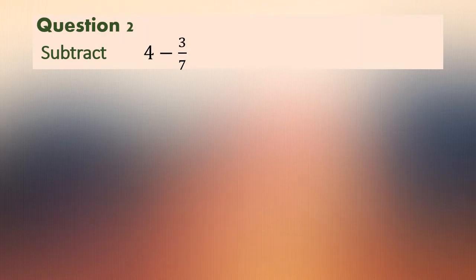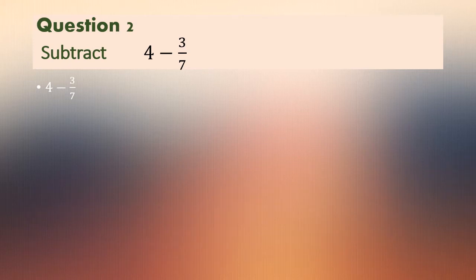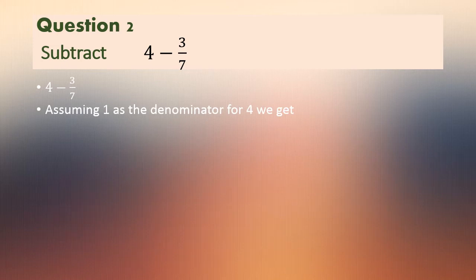Now question number 2: subtract 4 minus 3/7. Here the first part is a whole number and the second part is a fractional part. We will consider the denominator of 4 as 1 — if any number does not have a denominator, we can assume it to be 1. So we get the fraction as 4/1 minus 3/7.